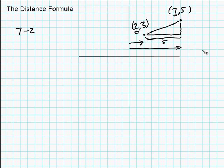Notice the same thing applies vertically. The 3 here is how far up I have to go from the x-axis to get up to this level. And 5 is how far I have to go up from the x-axis to get to this level. And so how far different are they? How far apart are they vertically? Well, I take 5 minus 3. And that gives us 2. So I take the 7 minus 2. And then I take my 5 minus 3.